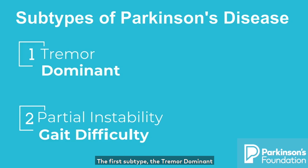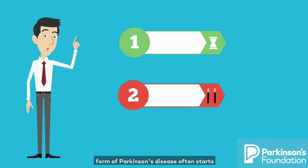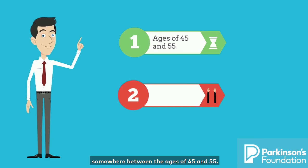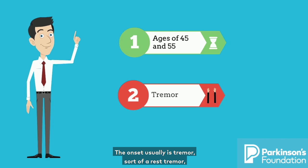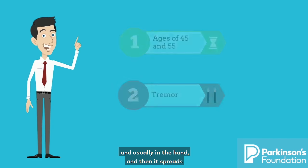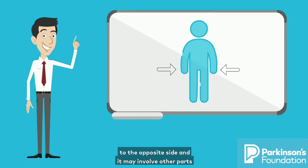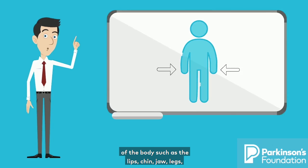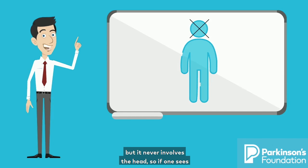The first subtype, the tremor dominant form of Parkinson's disease, often starts at a relatively younger age, somewhere between the ages of 45 and 55. The onset usually is a rest tremor, usually in the hand, and then it spreads to the opposite side and may involve other parts of the body such as the lips, chin, jaw, and legs. But it never involves the head.